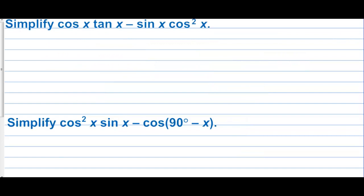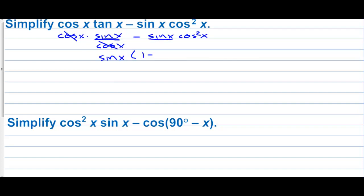Simplify cosine times tangent minus sine times cosine squared. Let's turn everything into sines and cosines. We have cosine x times sine over cosine, minus sine times cosine squared. The cosines cancel, giving sine of x minus sine times cosine squared. Factor out sine of x: we get sine x times one minus cosine squared x. One minus cosine squared x is sine squared x, so we end up with sine to the third x.